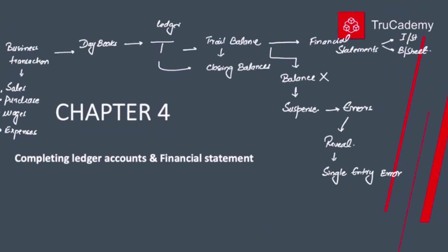Whenever such errors are revealed by the trial balance and debits and credits are not equal, we must open a suspense account. We will discuss later in the chapter how to rectify these errors and make the necessary adjustments. Sometimes there are errors which will not be revealed by the trial balance.